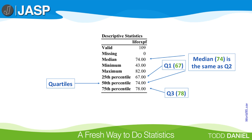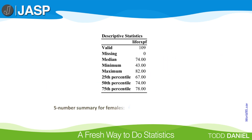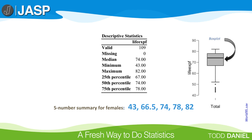Continuing with the five-number summary: the minimum is 43, the first quartile is 66.5, the median is 74. Notice that the median is the same as the second quartile, and the third quartile is 78. The maximum is 82. To reinforce the idea that we can display our data set as numbers or pictures, let's look at the box plot. You can see that the minimum, maximum, and the lines of the box all match the numbers from the five-number summary.